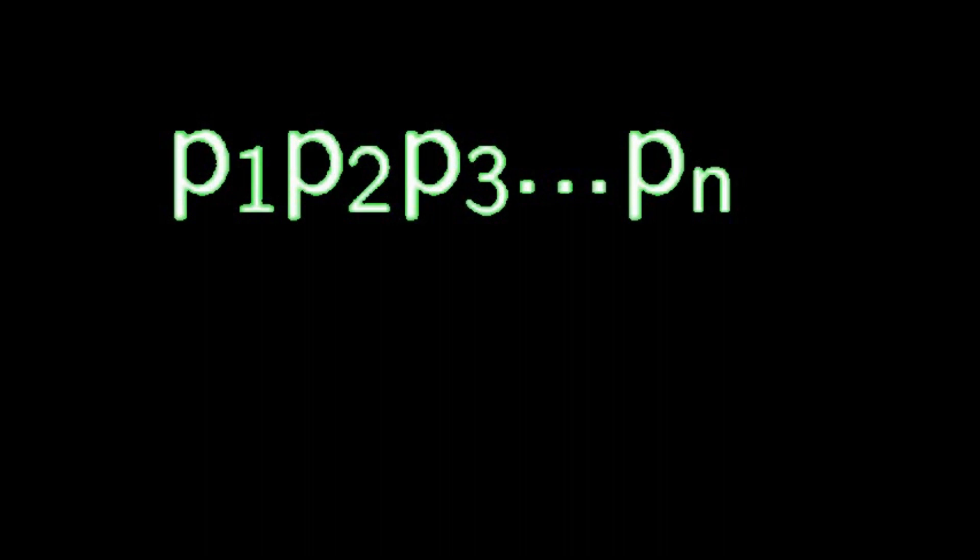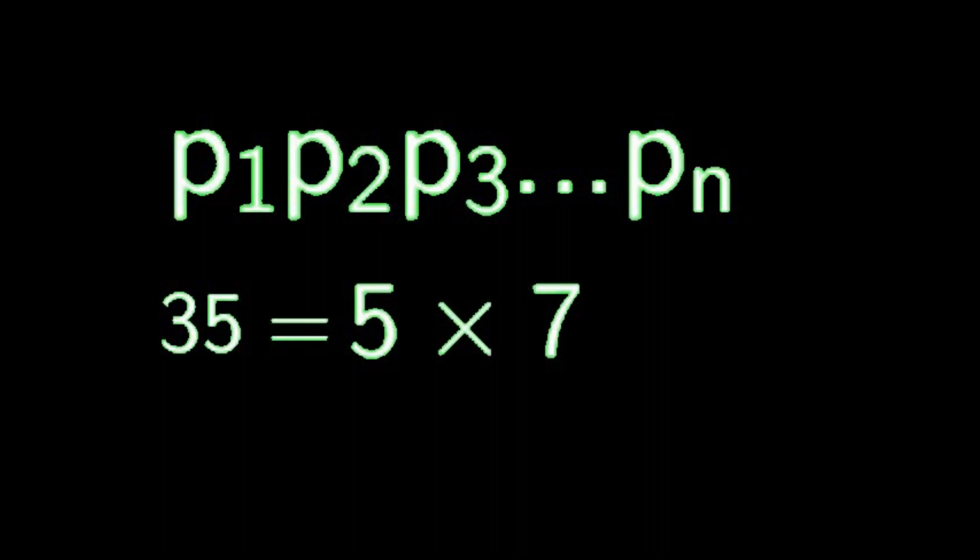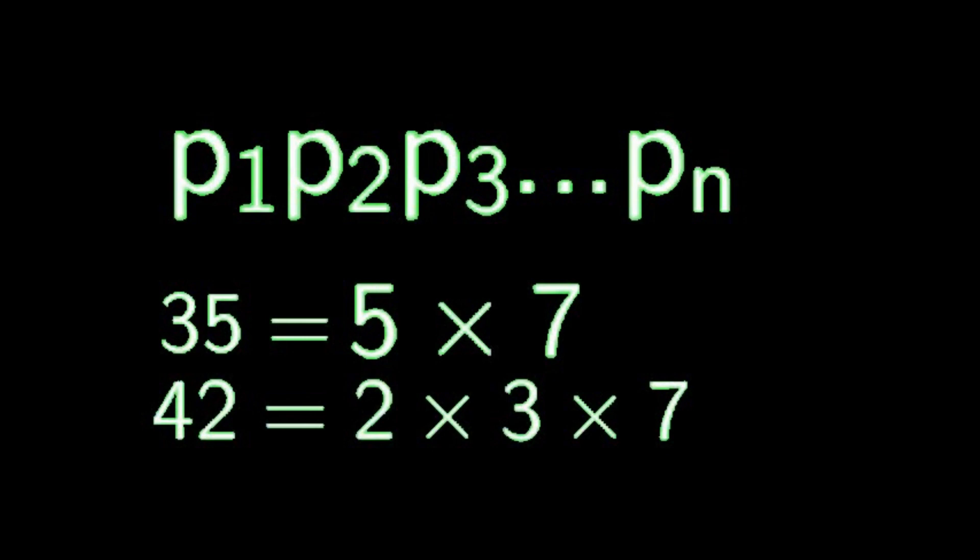Take the number 35 for example. It can be written as a product of 5 and 7 and so it has an even number of primes. 42 can be written as a product of 3 primes and so it has an odd number of prime factors.